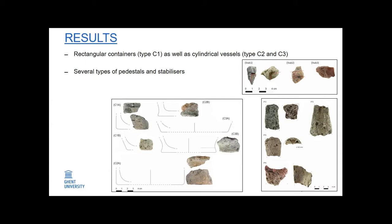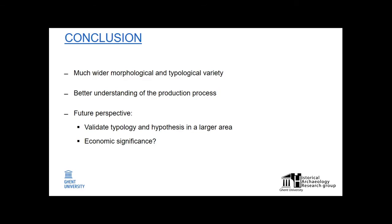Without going into too much detail, there were several notable results. We could identify at least six types of salt containers, and there were also several types of stabilizers — elements that maintained the vertical position to support the containers during the production process. The stabilizers were attached to the containers and kept them stable. We therefore concluded that there was a much wider morphological and typological variety than previously assumed, and that the analysis of briquetage has led to a better understanding of the production process.